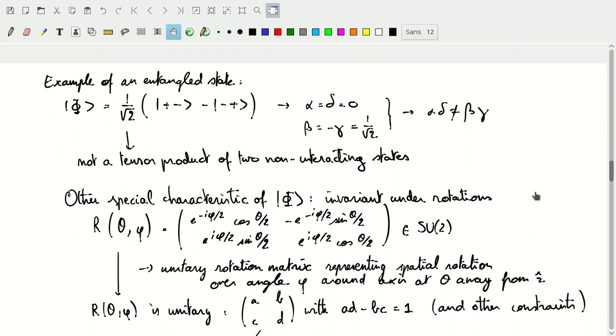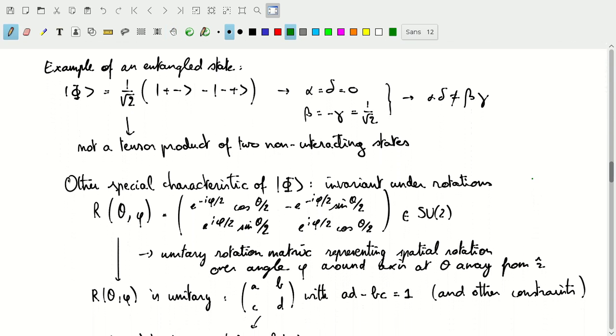So this must be an entangled state, one that describes interacting states or interactions between those two particles in that spin one-half Hilbert space. There's another interesting characteristic that this particular entangled state has, and that is that it is invariant under rotation.